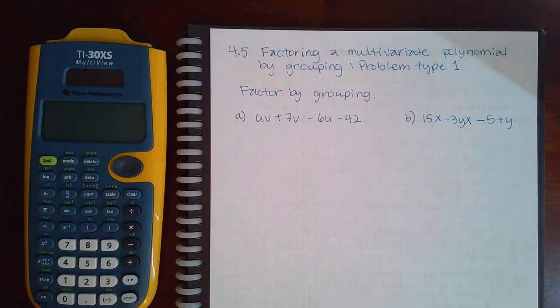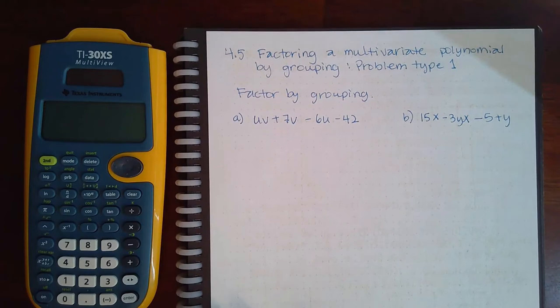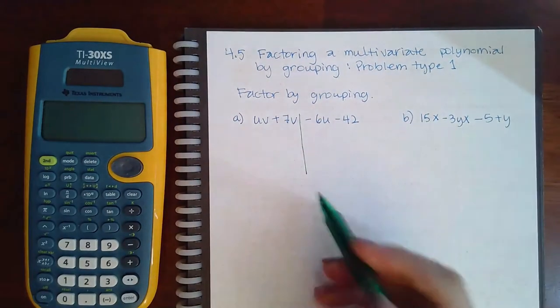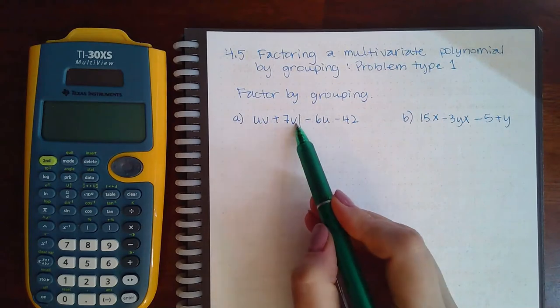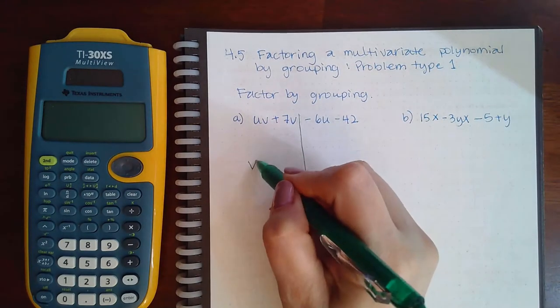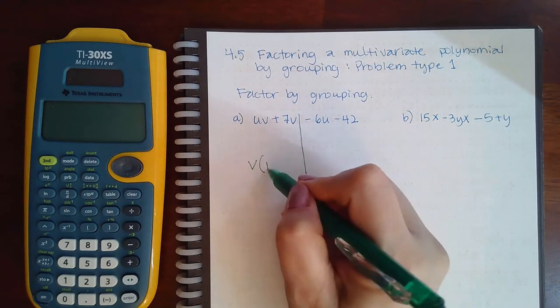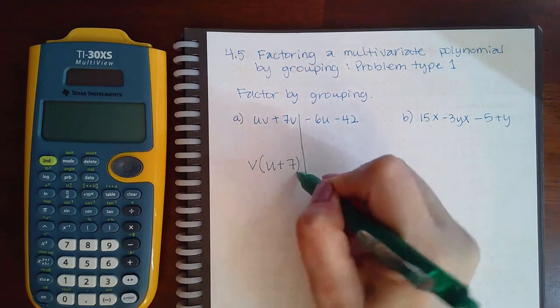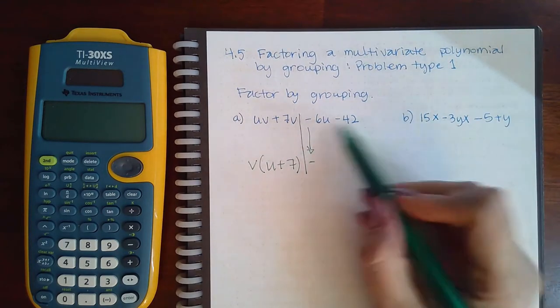Here we have factoring a multivariable polynomial by grouping, problem type 1. These are u's and these are v's. This half has a v in common, so if I take out the v, I'll be left with the u and the positive 7. I must bring down the minus.